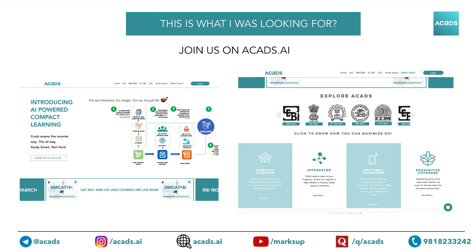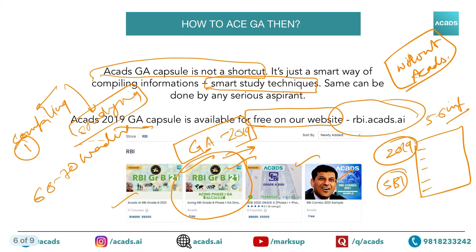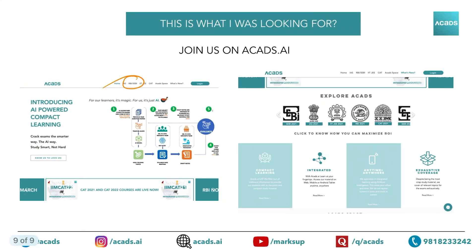If you want to join us, go to rbi.cats.ai — you will find four courses there and can subscribe to the GA capsule. For any other questions or help, you can text us or email us at rbi@acats.ai. The website is rbi.cats.ai. Thank you.